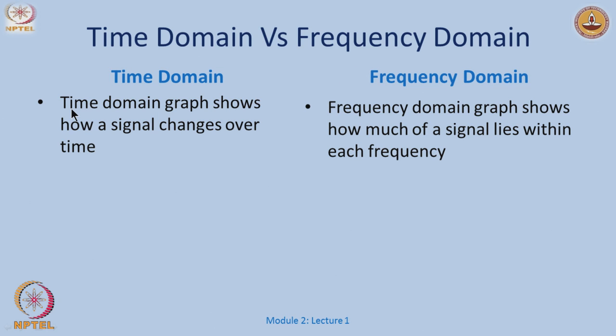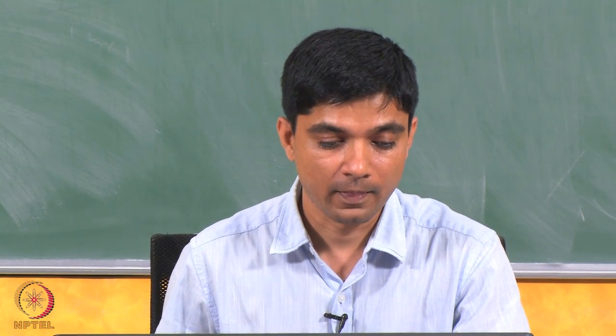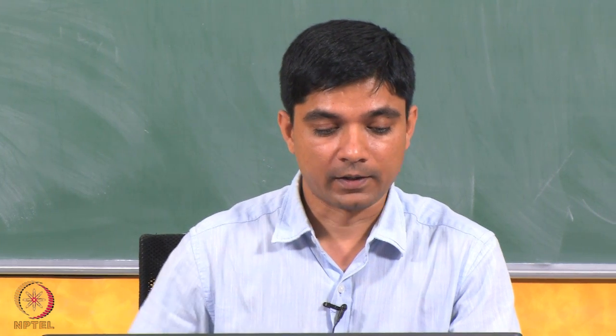What does the time domain do? The time domain shows how a signal changes over time. Similarly, the frequency domain graph shows how much of the signal you have within each frequency — for example, when you do things like low pass, high pass, band pass, and all pass filters.